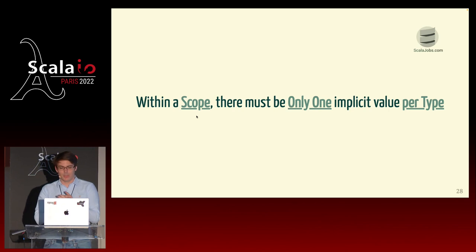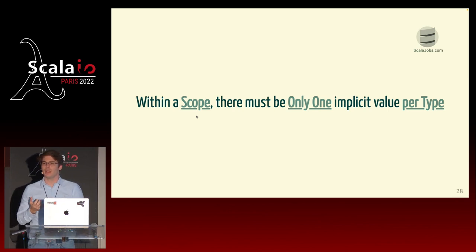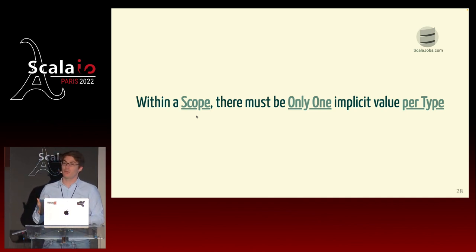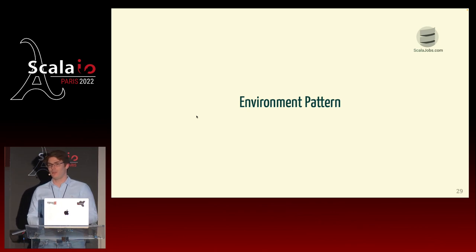Now that we've seen how implicit works, let's review a couple of design patterns for implicit parameters — when does it make sense to use them in practice? Today we'll go through two patterns that I think are the most useful. The first is called the environment pattern. In this pattern, we categorize parameters into two areas: normal parameters that change every time you call your function, and environment parameters that are kind of constant for a few function calls. Let's go through an example to see how it works.